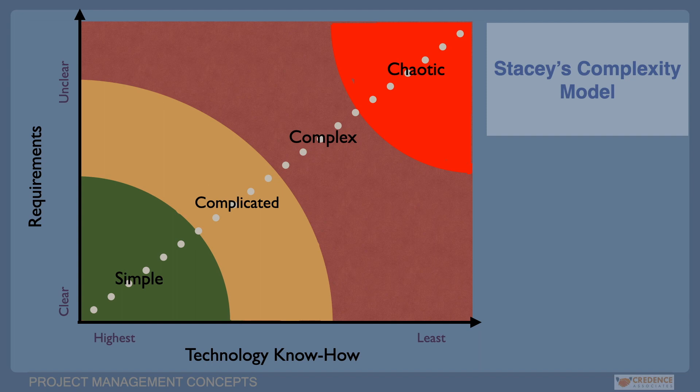One might be wondering, how does this help manage project complexity? The answer lies in tailoring. By identifying where our project falls on Stacey's Matrix, we can tailor our methods and practices accordingly.